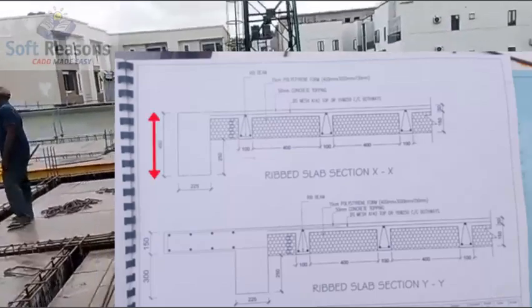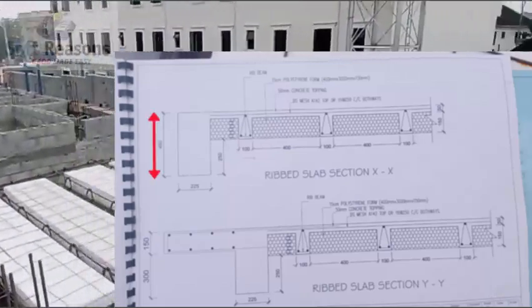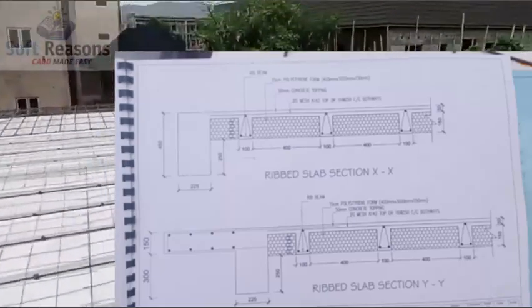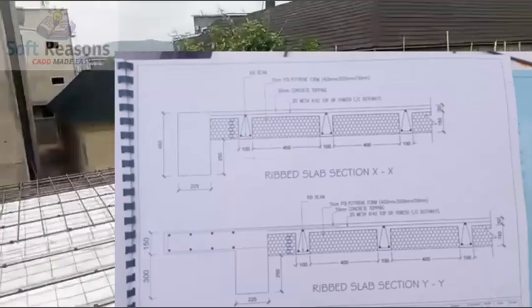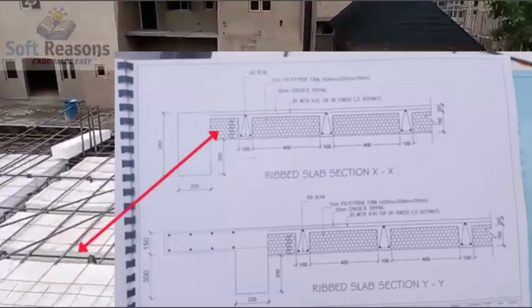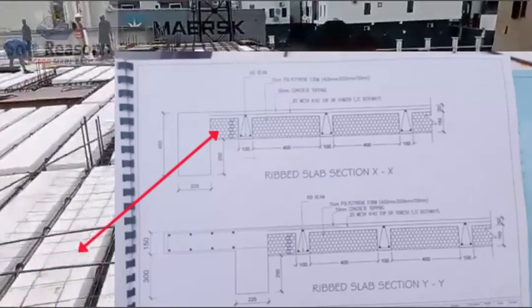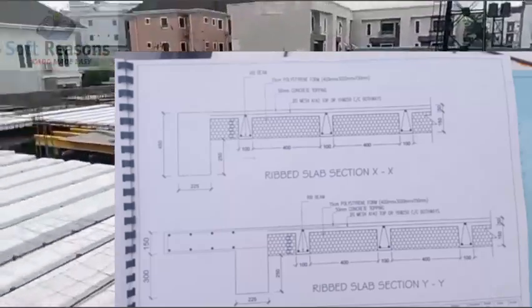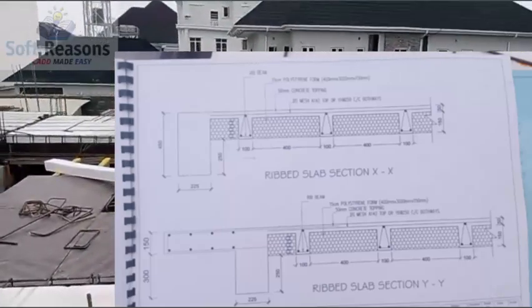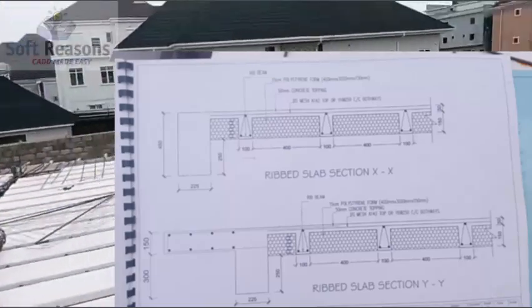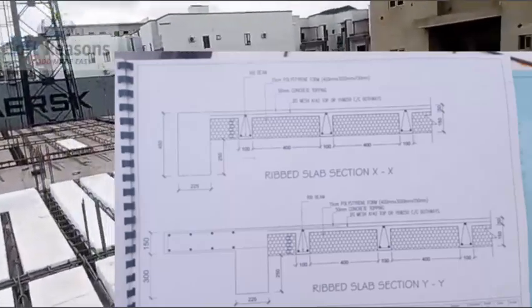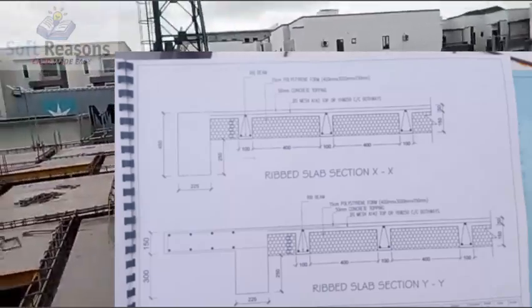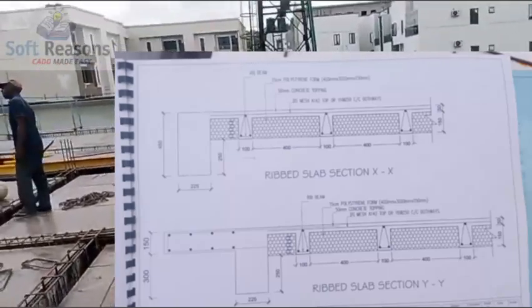The overall depth of the primary beam is 450 millimeters and the width of that beam is 225 millimeters. The material used between the rib beams is called filler material. The sections used at that site are 400 millimeters by 3,000 millimeters in length — the 400 corresponds to the spacing between the rib beams — and the depth is 150 millimeters, which matches the 150 in our section.